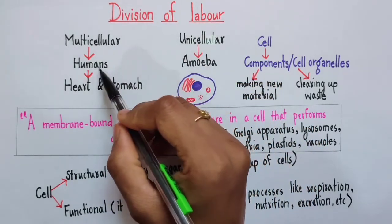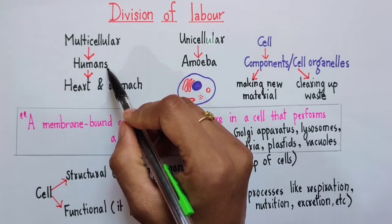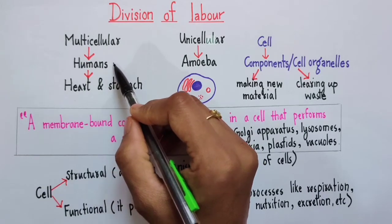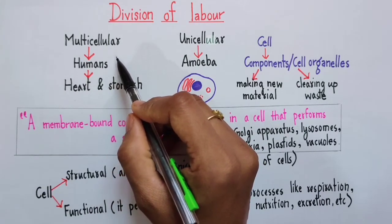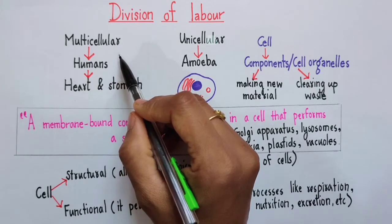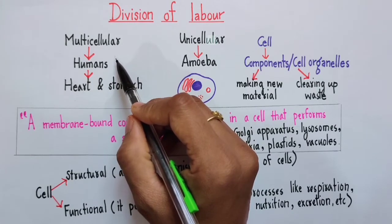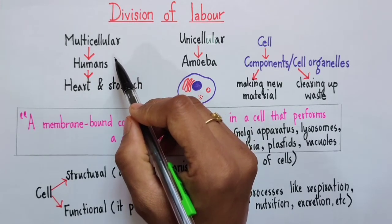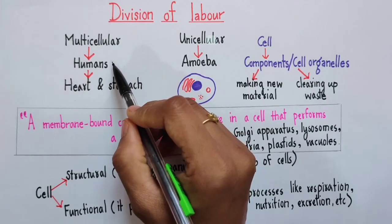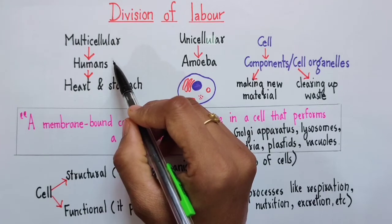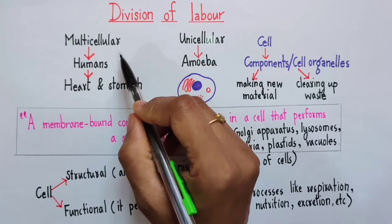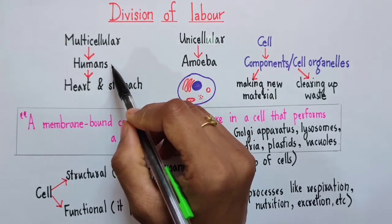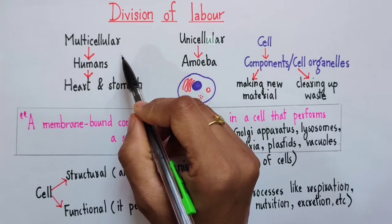For example in humans, externally we do observe division of labor at the level of different body parts. What our hands can do, our neck can't do. What our neck can do, our hands can't do.